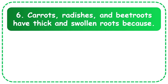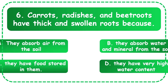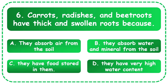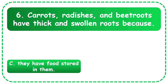Next question: Carrots, radish, and beetroot have thick and swollen roots because — the options are they absorb air from the soil, they absorb water and minerals from the soil, they have food stored in them, or they have very high water content. The correct answer is they have food stored in them.